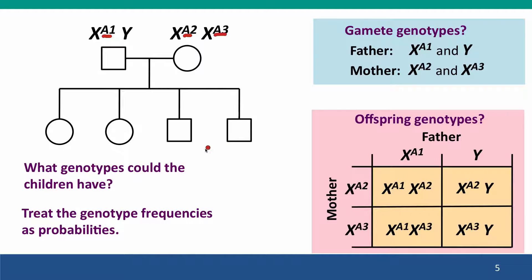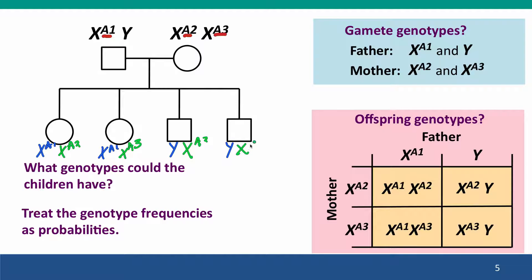We can assign genotypes to the children. The daughters must have their father's X chromosome, so they must have X-A1, and the sons must have their father's Y chromosome. The daughters could have either of their mother's X chromosomes, so they could have X-A2 or X-A3, and the sons similarly could have X-A2 or X-A3. Note that because these are probabilities, there's no guarantee that each child will have a different genotype.